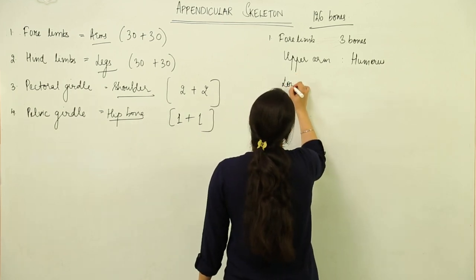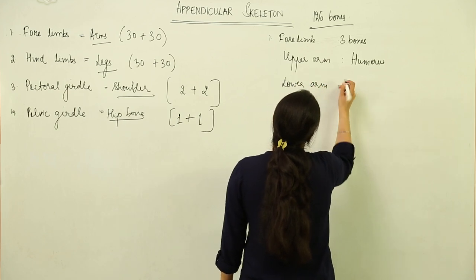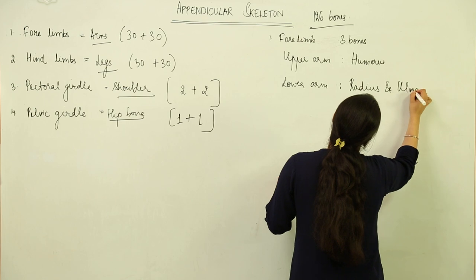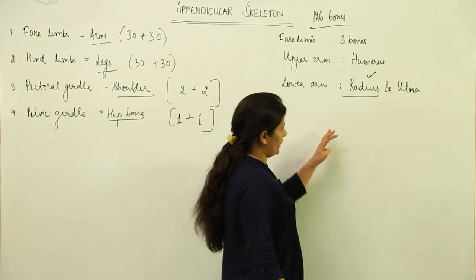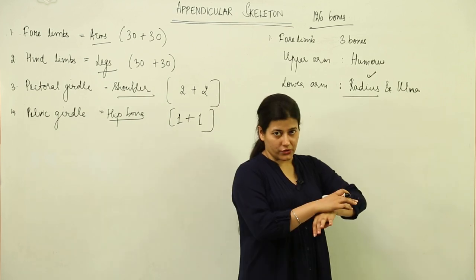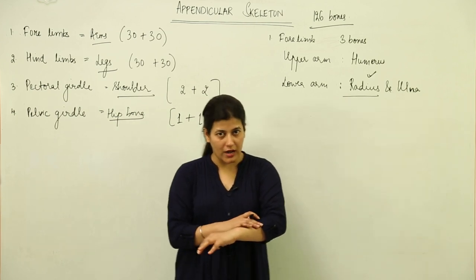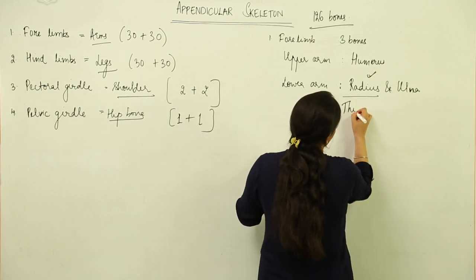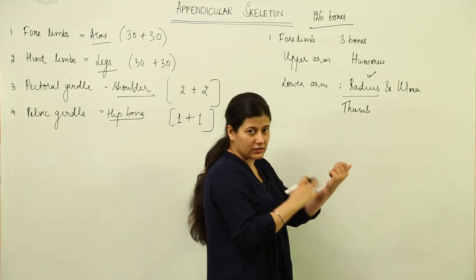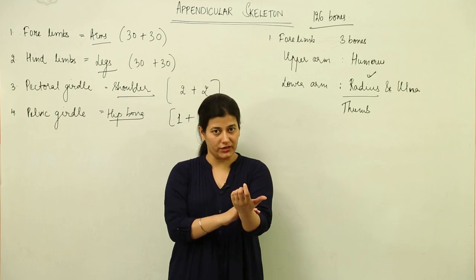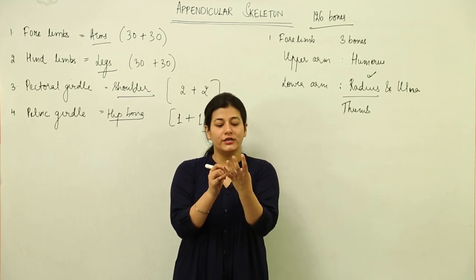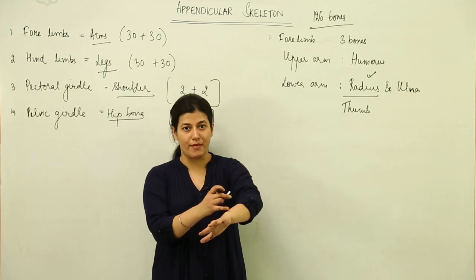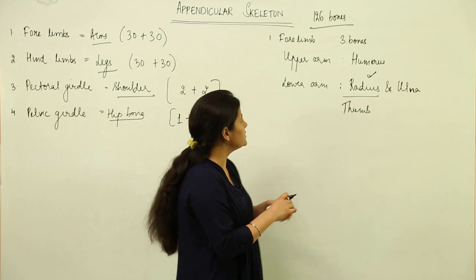The lower arm has two bones: radius and ulna. To remember their positions, radius is towards the thumb side — you can write 'R' there — and ulna is towards the small finger side — write 'U' there. This is a helpful way to remember that radius aligns with the thumb and ulna with the little finger.